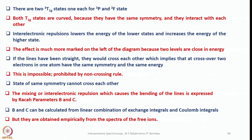Interelectron repulsions lower the energy of the lowest state and increase the energy of the highest state. The effect is most marked on the left of the diagram where the two levels are close in energy. If the lines were straight, they would cross — but this implies two electrons with the same symmetry and same energy, which is forbidden. This is prohibited by the non-crossing rule: states of the same symmetry cannot cross each other.